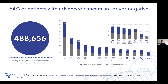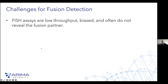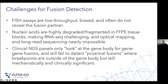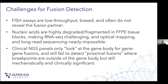Part of the reason for lower diagnostic yield in these papers could be: FISH assays are single-gene tests and won't find anything novel; nucleic acids are degraded in FFPE tissues, making RNA sequencing challenging and optical mapping or long-read sequencing essentially impossible; and importantly, clinical NGS panels tend to only look at gene bodies. Any breakpoint outside the gene body will be missed. Those intergenic breakpoints are really important and well-known in diseases like lymphoma and other hematologic malignancies, where proximal fusions — with breakpoints outside the gene body — are still very mechanistically and clinically significant.